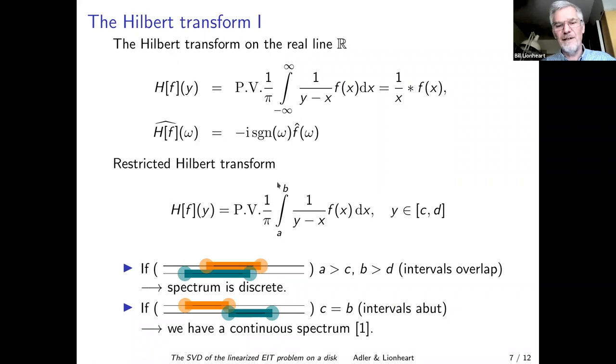If we restrict it to an interval, comparing with doing the radon transform on the whole plane versus a disk, if we integrate between a and b but evaluate between two other points c and d, it turns out that if the intervals overlap, the spectrum is discrete. Whereas if they just abut onto each other, in other words they share one point, we have a continuous spectrum and that's going to be important for us.